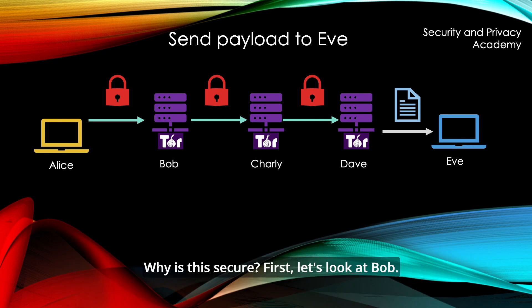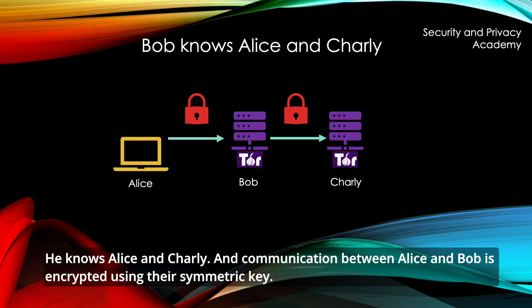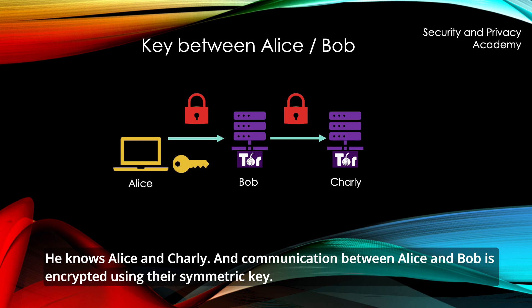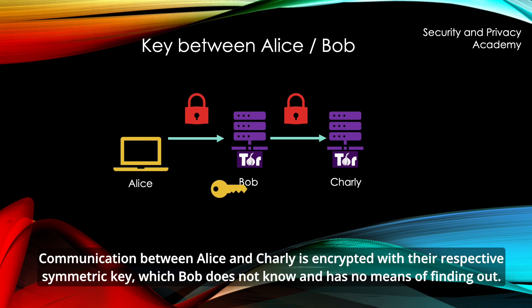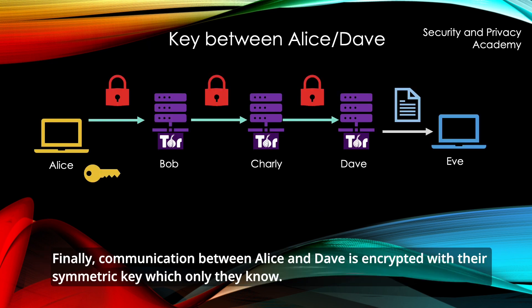Why is this secure? Let's look at Bob — he knows Alice and Charlie, and communication between Alice and Bob is encrypted using their symmetric key. Communication between Alice and Charlie is encrypted with their respective symmetric key, which Bob does not know and has no means of finding out. Communication between Alice and Dave is encrypted with their symmetric key, which only they know.